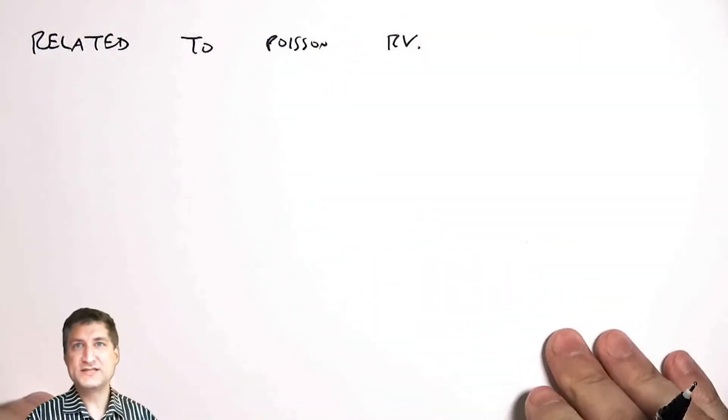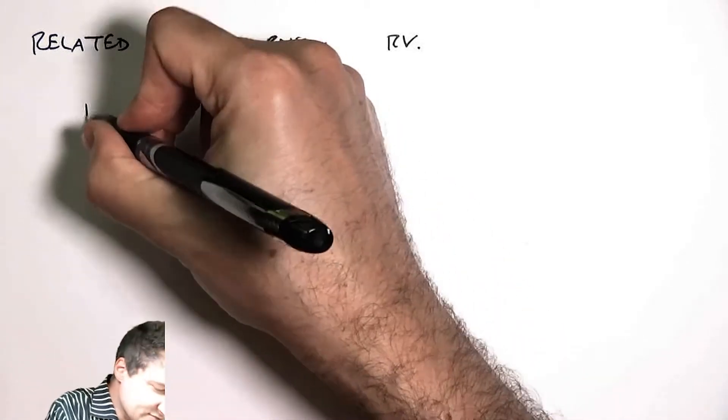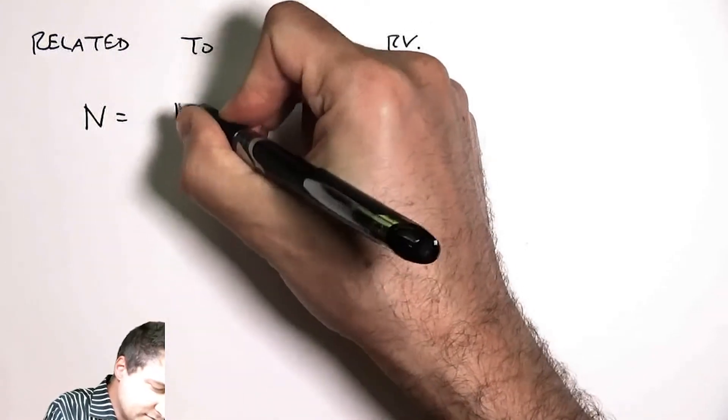Let's suppose that we've got some sort of arrival problem where you've got, for example, people arriving to the bank. I could think about that in two different ways. One way is the number of arrivals in time t.